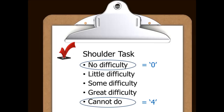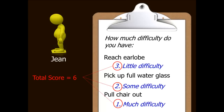Remember that measurement is the assigning of numbers according to rules. Here are the rules for this measurement scale: a person has five choices when responding to an item, ranging from no difficulty to cannot do, with corresponding numbers from zero to four. To get a person's shoulder function score, you add up the number associated with each item response to get a total score. Here are the items presented to Jean: how much difficulty do you have reaching your earlobe, picking up a glass of water, and pulling a chair out from a table?